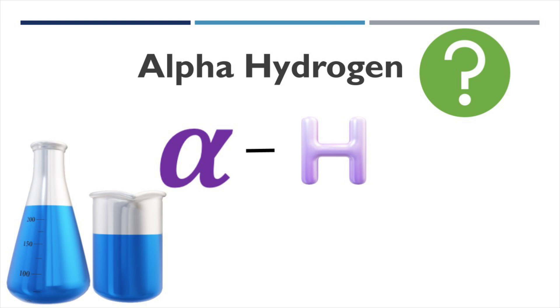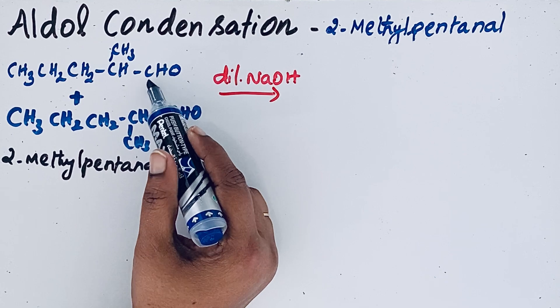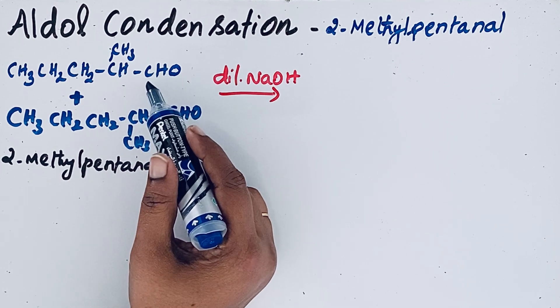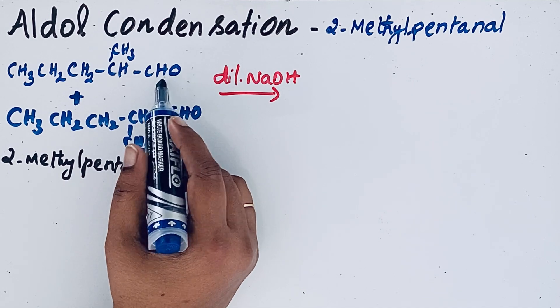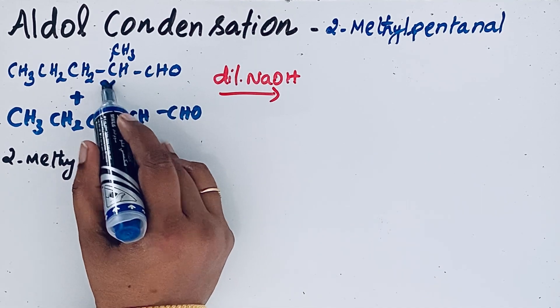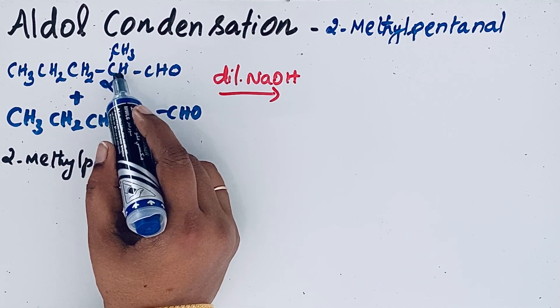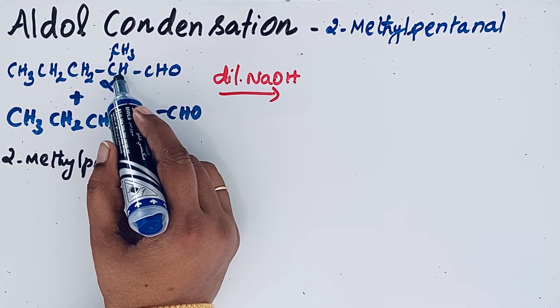What is alpha hydrogen? The carbon which is attached next to that functional group is called alpha carbon. So here CHO group is that functional group. So this is the alpha carbon. The hydrogen which is attached to that alpha carbon is called alpha hydrogen.